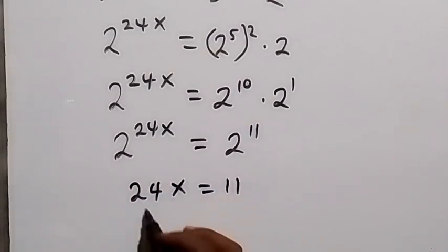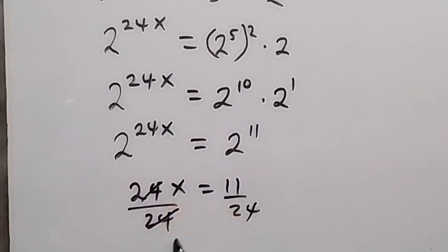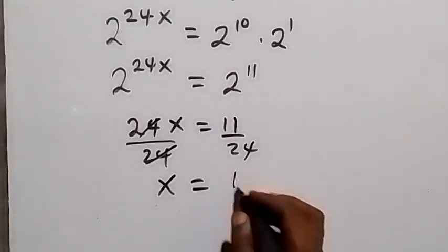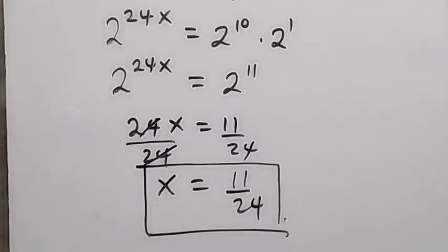Dividing both sides by 24, the 24s cancel and x equals 11 over 24. So the solution to the given problem is x equals 11 over 24. You can check to confirm that this solution satisfies the given problem. Please share this video, give a thumbs up, subscribe to my channel — see you next class, bye for now.